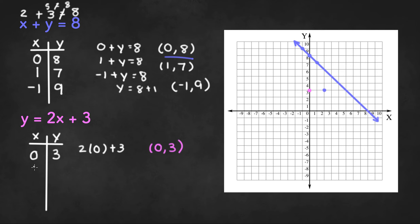Now we can try x equals 1. So if x equals 1, we have 2 times 1 plus 3. And 2 times 1 is 2 and 2 plus 3 is 5. And that will be our next coordinate.